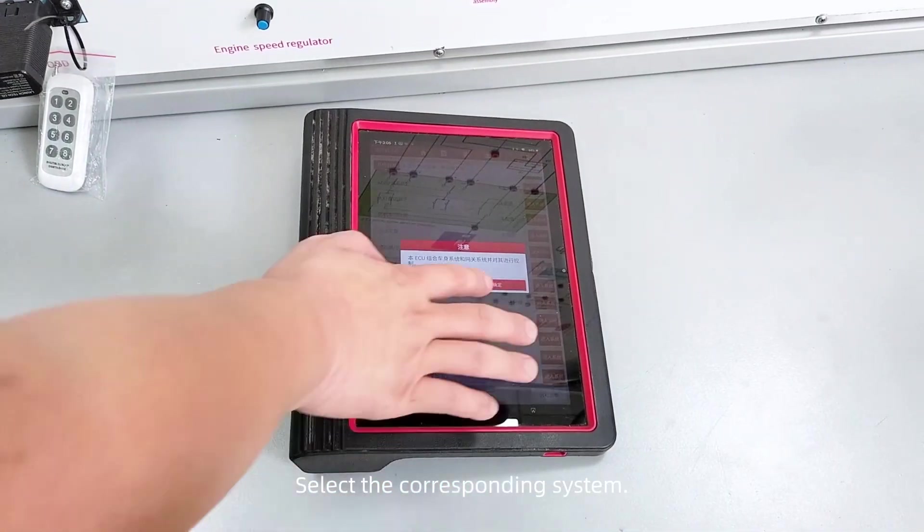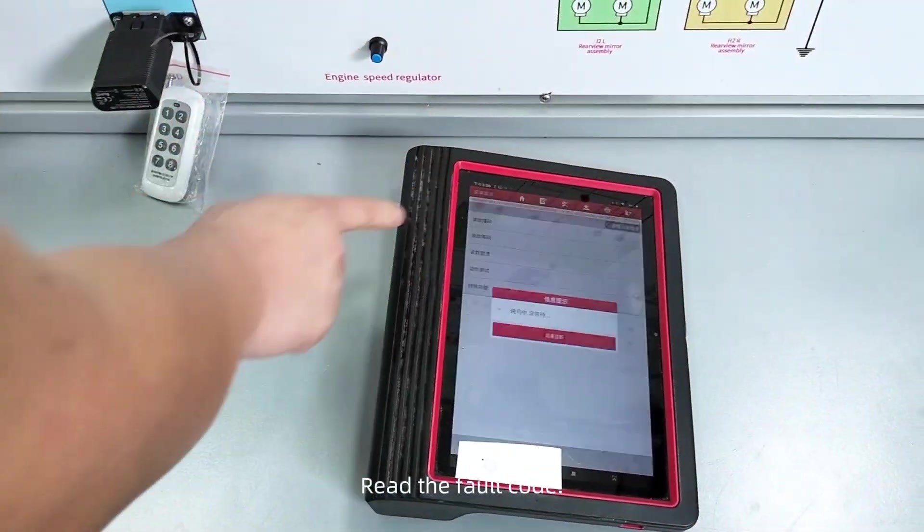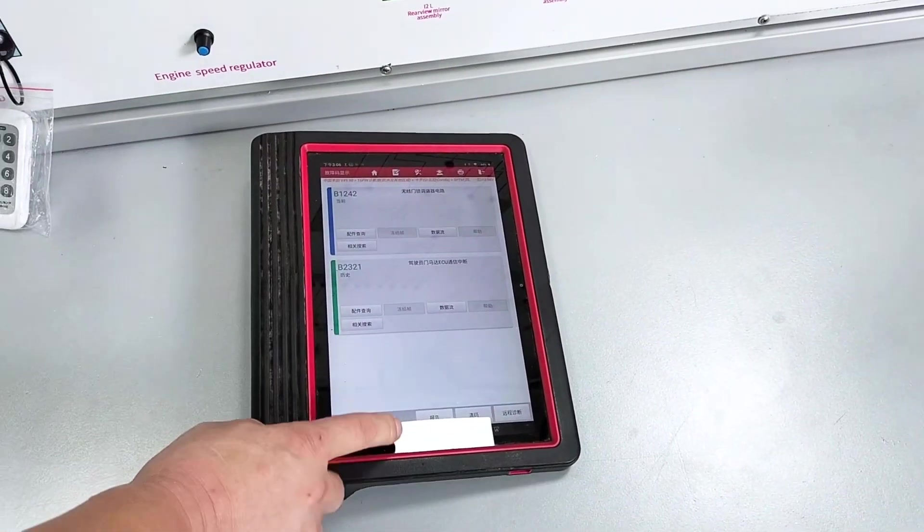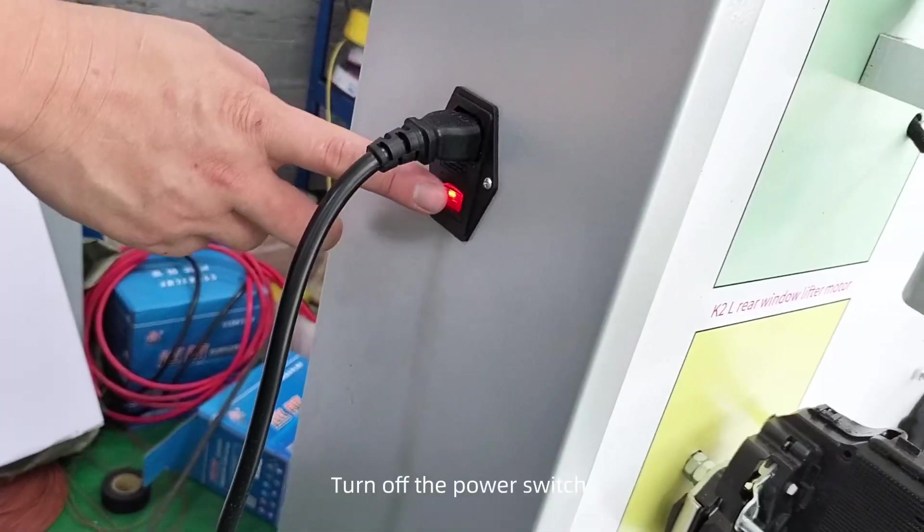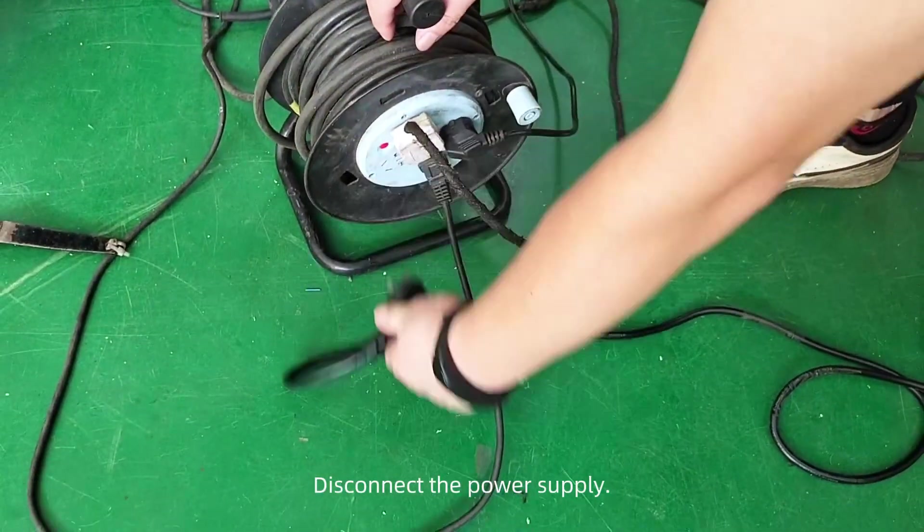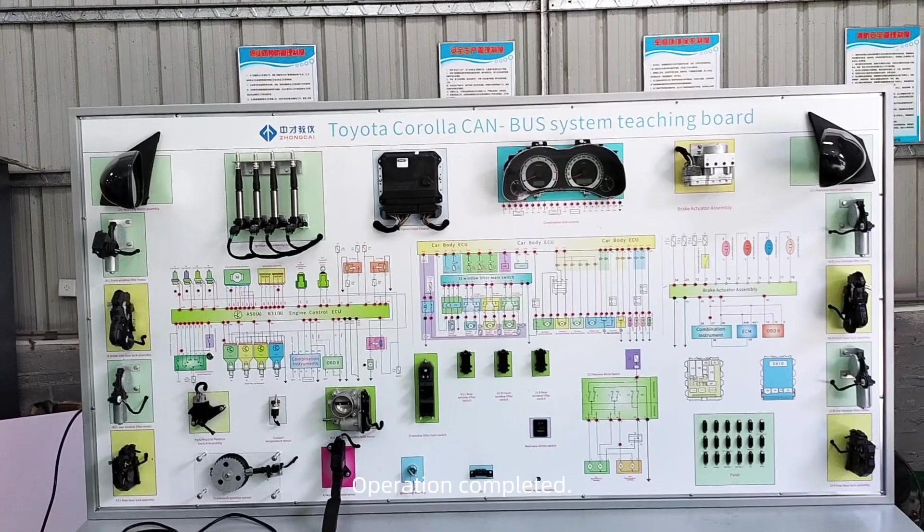Select the corresponding system. Read the fault code. View the fault code. Disconnect. Operation completed. Turn off the power switch. Disconnect the power supply. Operation completed.